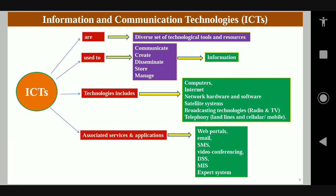Which technologies do ICTs include? It includes computers, internet, network hardware and software, satellite systems, broadcasting technologies (that is radio and TV — television broadcasting and radio broadcasting), then telephony — both landline and cellular or mobile. These technologies ICTs include, along with their associated services and applications.